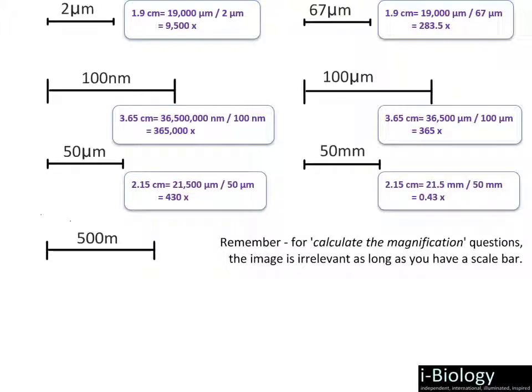Here the scale bar size is quite large in terms of millimeters, meaning we must be looking at something actually quite large in size — not something microscopic. If that scale bar is about 2.15 centimeters or 21.5 millimeters, and we convert everything to millimeters, 21.5 millimeters divided by 50 millimeters gives 0.43 magnification.